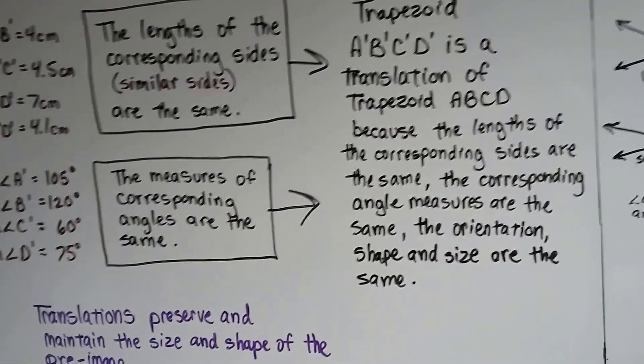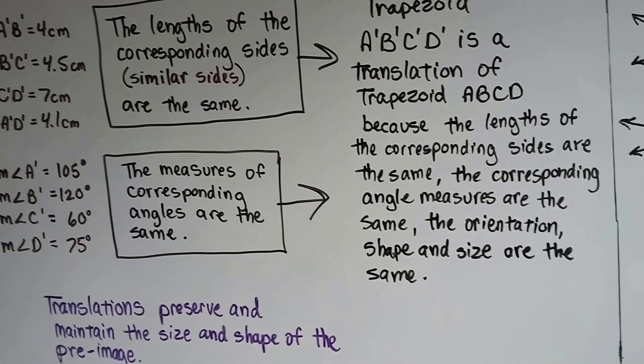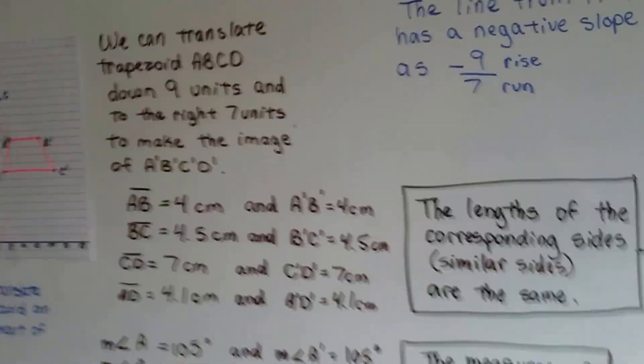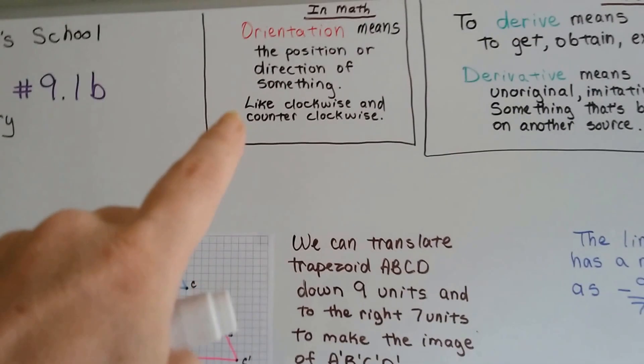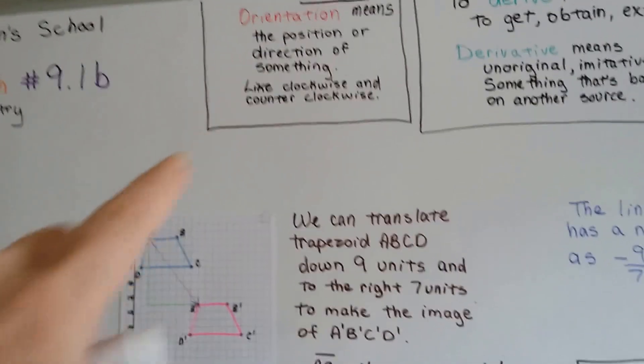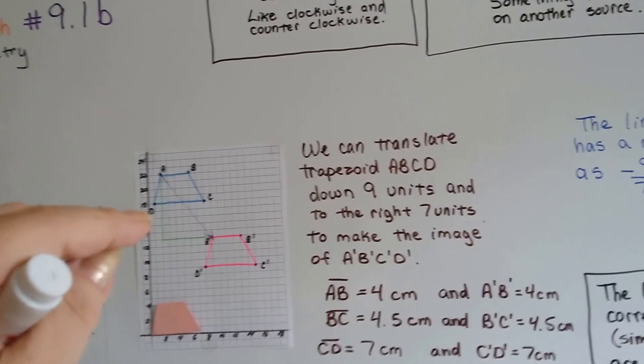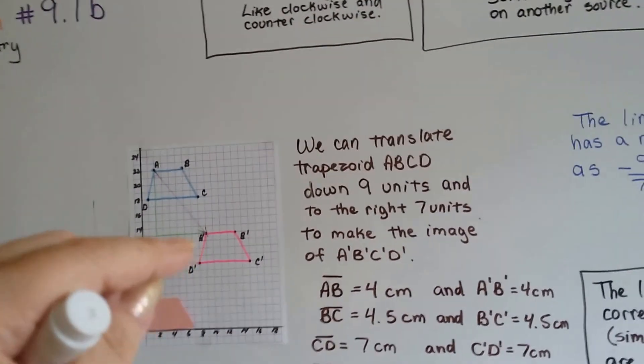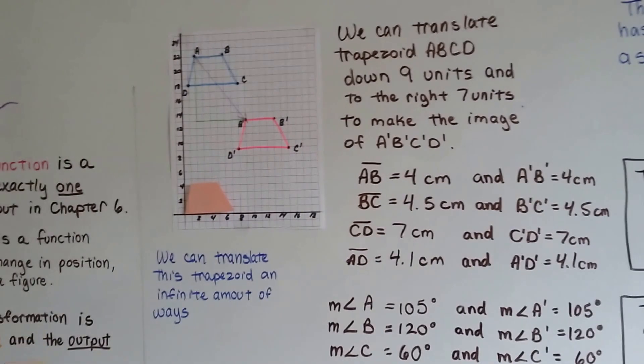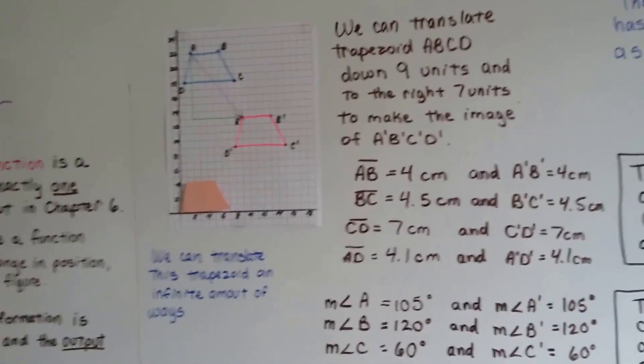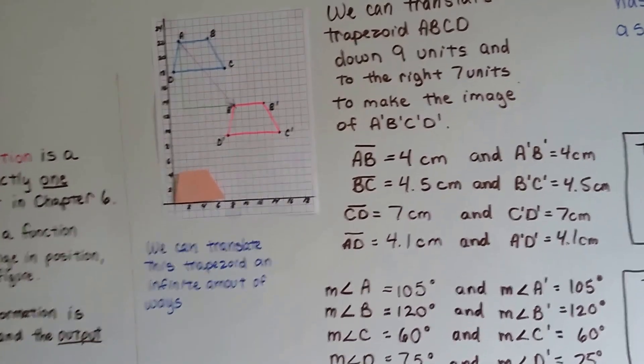The orientation, the shape and size are the same. Remember what orientation is from the last video. It's the direction or the position of something. It's sitting exactly the same. This has got the same 75 degree angle that this one does. The orientation is the same, and its shape and size are the same. So it's a translation.